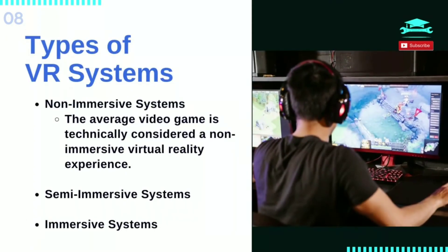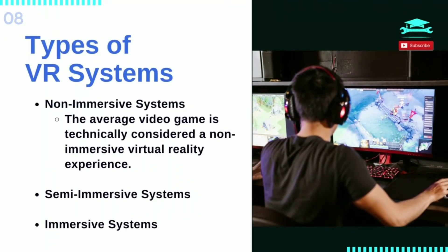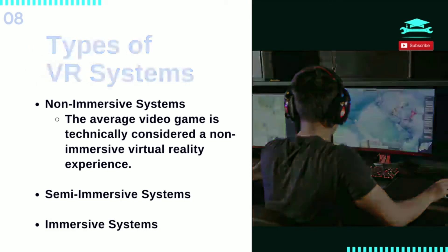Types of VR systems: Non-immersive simulations are often forgotten as an actual type of VR because they are very common in our everyday lives. The average video game is technically considered a non-immersive virtual reality experience. These types of experiences have become more advanced in recent years, with video games like Wii Sports where the system actually detects your motion and translates it on screen.